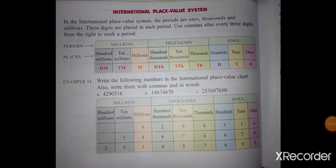Hello children. In this session I am going to teach you 5th mathematics, that is 2nd chapter, Large Numbers. In this chapter, you will learn about the International Place Value System. You already learnt about the Indian system, so there is another system for writing numbers — that is the International Place Value System.